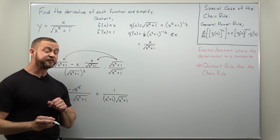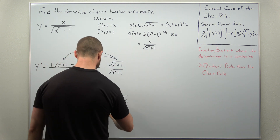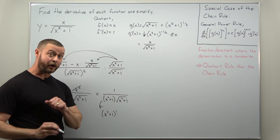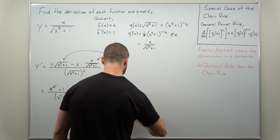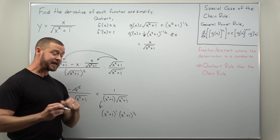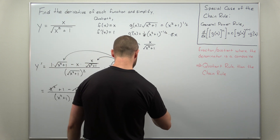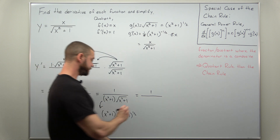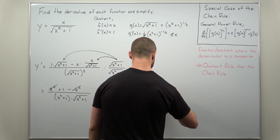We can simplify this further by recognizing the square root as a one-half power. The denominator is x squared plus one to the first power multiplied by x squared plus one to the one-half power. Since we're multiplying the same bases, we add the exponents: one plus one-half comes out to three-halves. So our final simplified answer for the derivative is one over x squared plus one to the three-halves power.